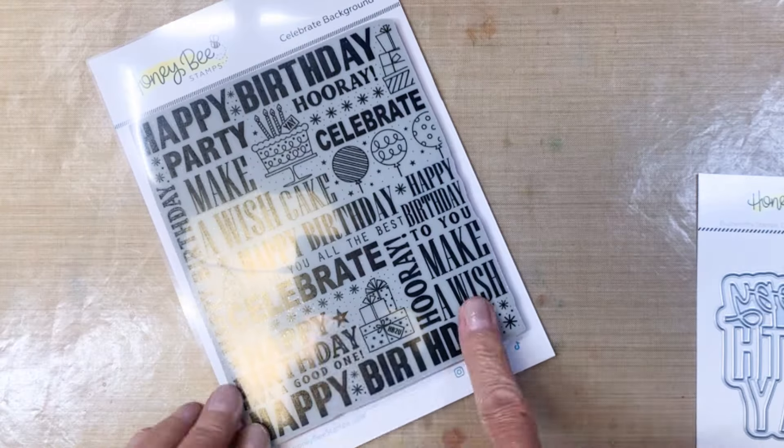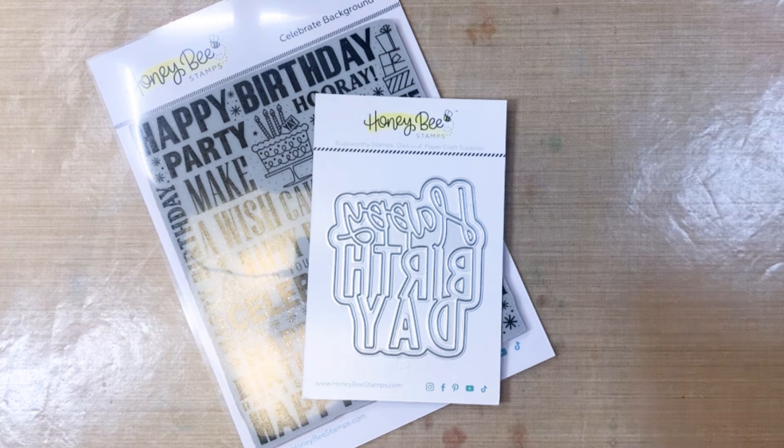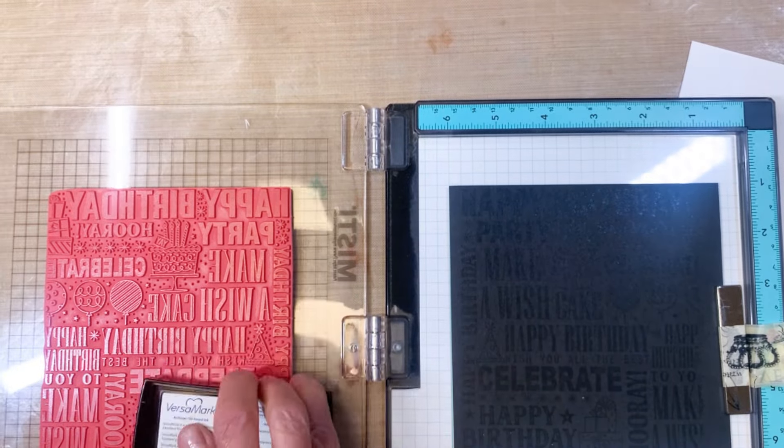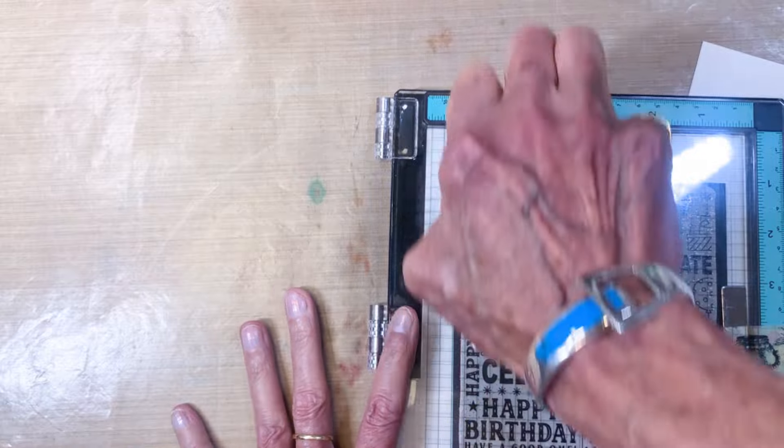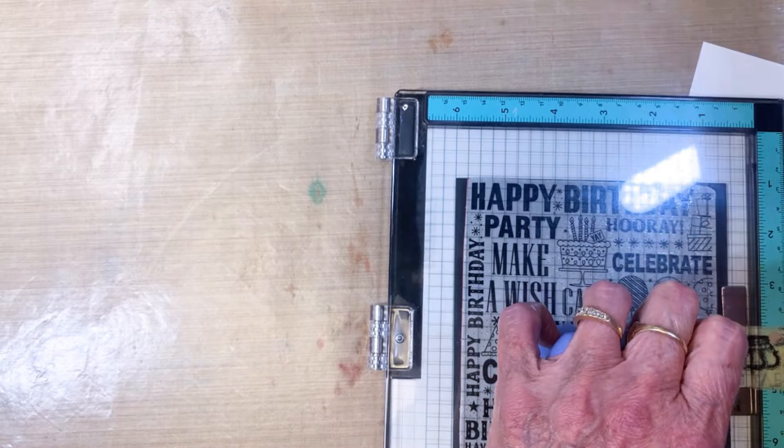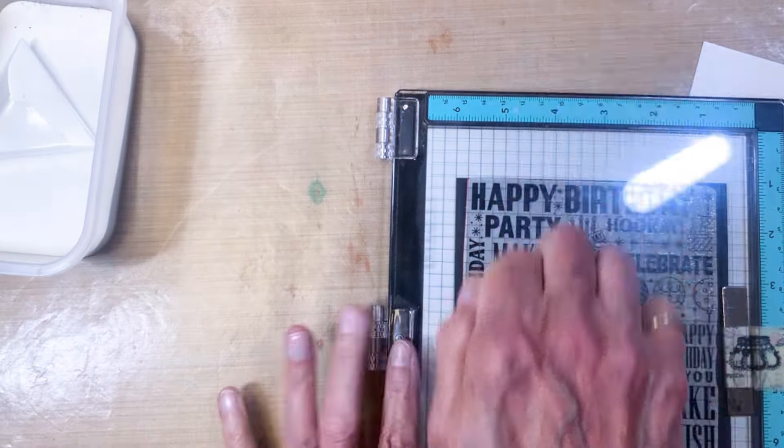I'm going to start with this background die called Celebrate and also the Big Birthday Die Cut, and then I'm going to work with three different types of cardstock. I've got black cardstock, watercolor cardstock, and regular cougar white cardstock, and I'm using three different techniques on each one of them.